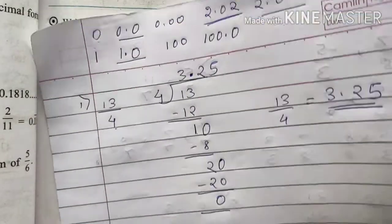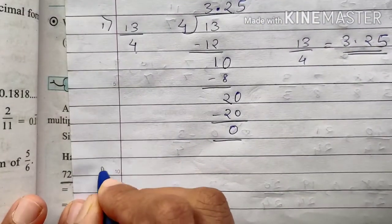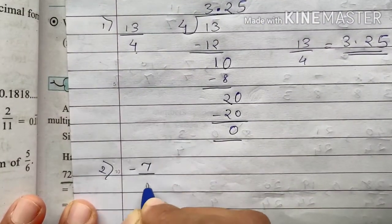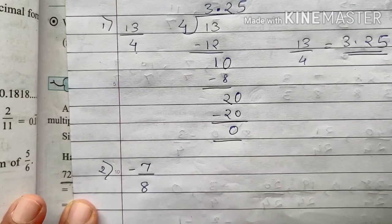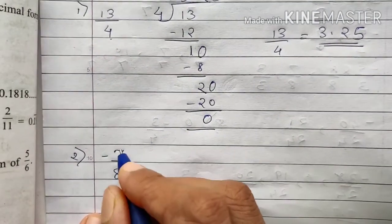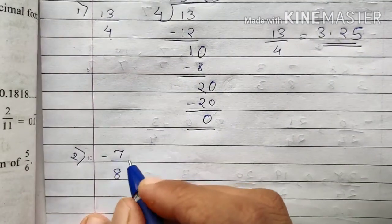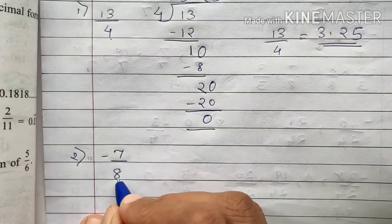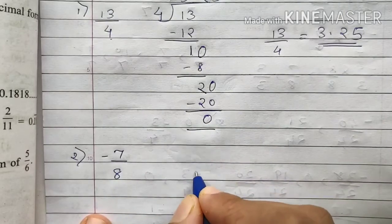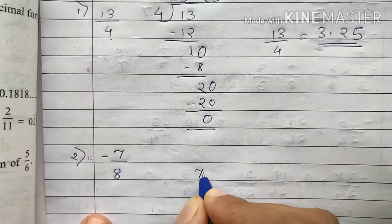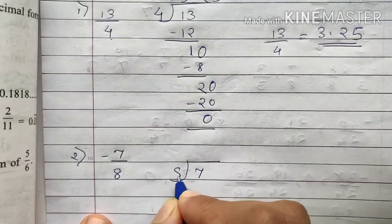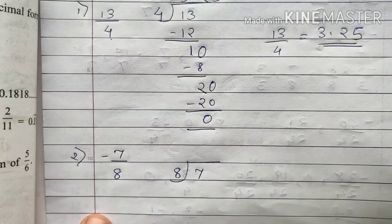The second sum is minus 7 upon 8. The method is exactly the same — you have to convert this fraction to decimal form. 7 will be the dividend and 8 is the divisor.